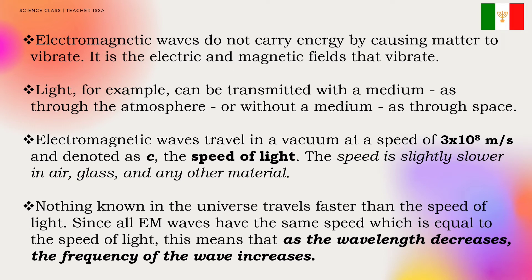The speed is slightly slower in air, glass, and any other material. To appreciate just how great this speed is, consider this: light from the sun travels 150 million kilometers to Earth in about 8 minutes.